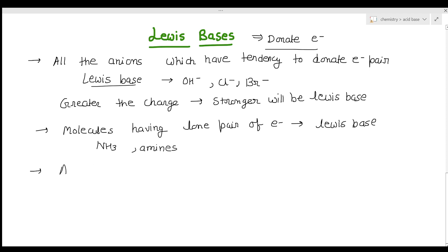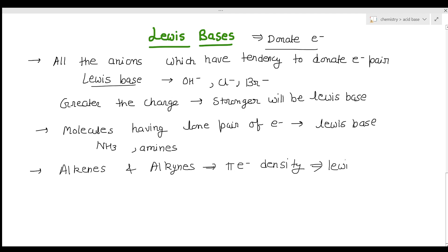Alkenes and alkynes have pi electron density that can be donated to substances like metals, so they can act as ligands and therefore act as Lewis bases. Lewis bases can be anions, molecules, or alkenes and alkynes with pi electron density — all these substances act as Lewis bases.